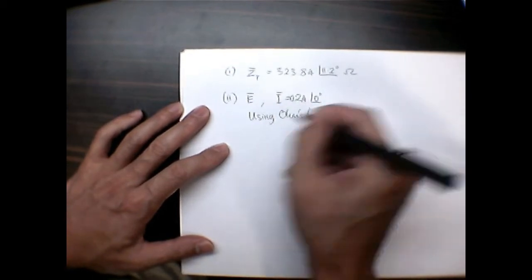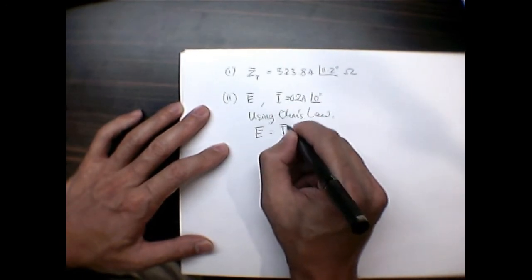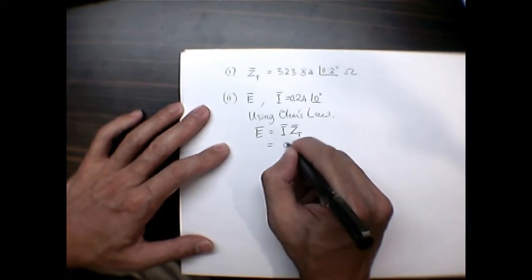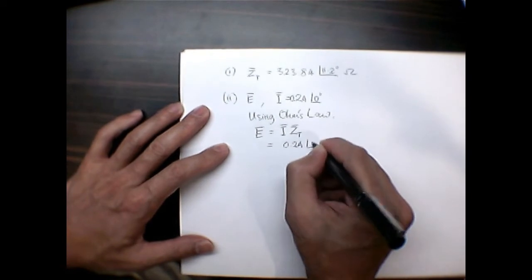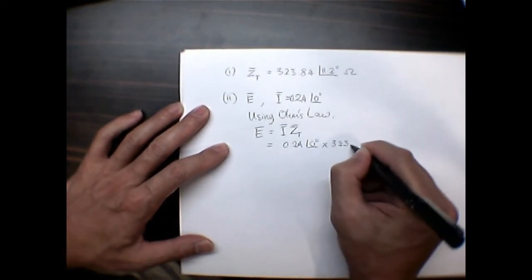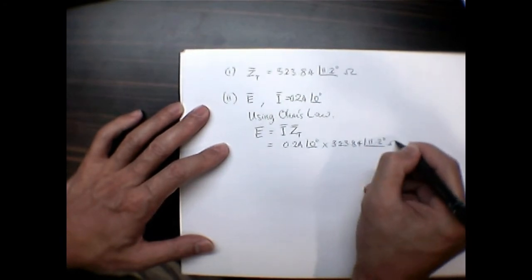We have E equals I times zt. That is equals to 0.2 amps at the angle of zero, multiplied by 3.84 at an angle of 11.2 degrees ohms.